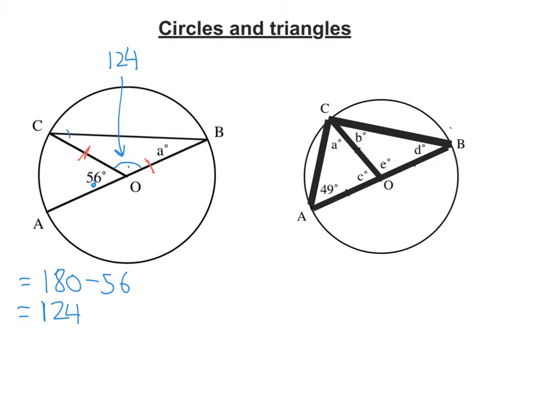What we know is that this angle here is going to be the same as this one here, because we've got an isosceles triangle. So A is going to be 180 minus 124, all over 2.